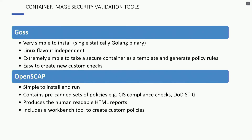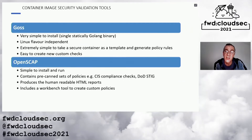Comparing GOSS and OpenSCAP: GOSS is very simple to install — it's just a single binary. It's Linux flavor independent, and it's extremely simple to take a secure container as a template and generate policies from it. It's also extremely easy to create your own custom checks, as we saw with the command construct. OpenSCAP is relatively simple to install but does have a few dependencies. A really nice feature is these pre-canned sets of policies — the CIS ones and the Department of Defense STIG profile — and the feature of producing human-readable output. It also includes a workbench tool to help you create your own custom policies, since they're a little more tricky than GOSS.